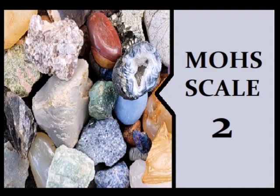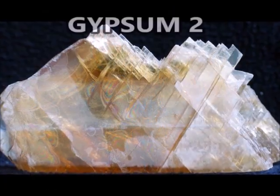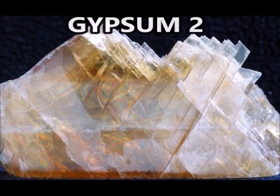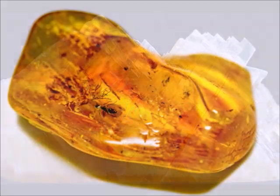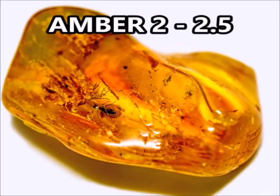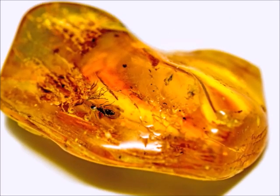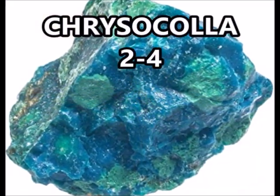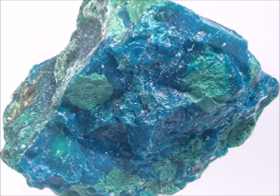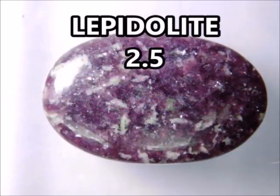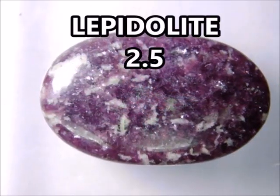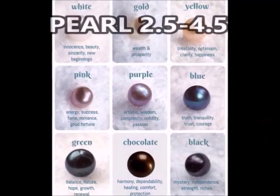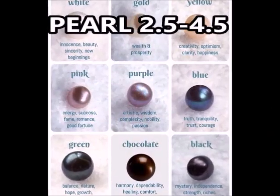Mohs scale 2. Gypsum, level 2. Amber, 2 to 2.5. Chrysocolla, 2 to 4. Butylite, 2.5. Pearl, 2.5 to 4.5.